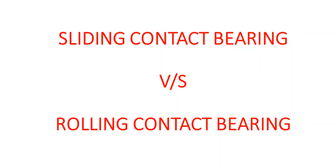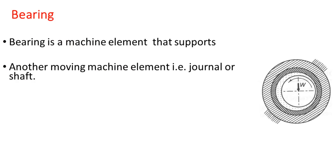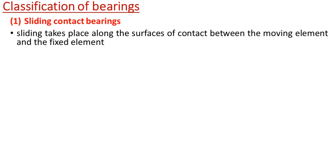A very important topic is the difference between sliding contact bearing and rolling contact bearing. The function of a bearing is that it is a machine element that supports another moving machine element like a journal or shaft. A bearing permits relative motion between machine members while carrying the load, so the load W which acts on the journal or shaft is supported by the bearing.